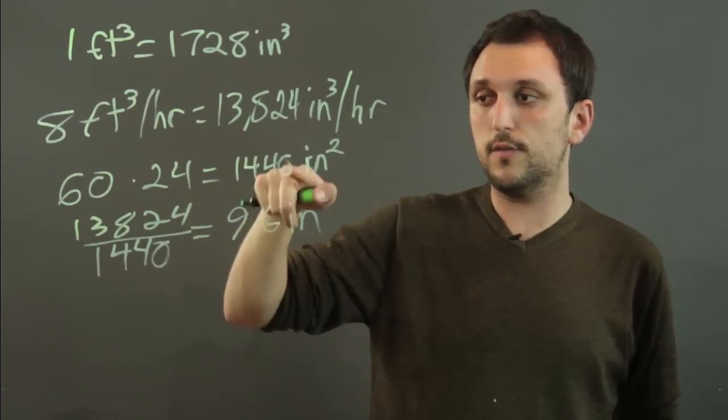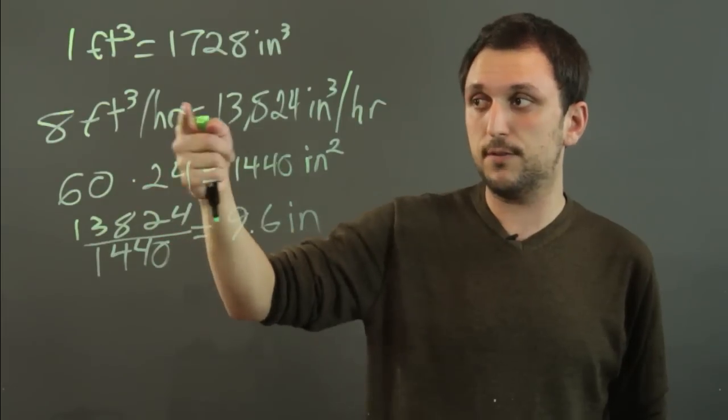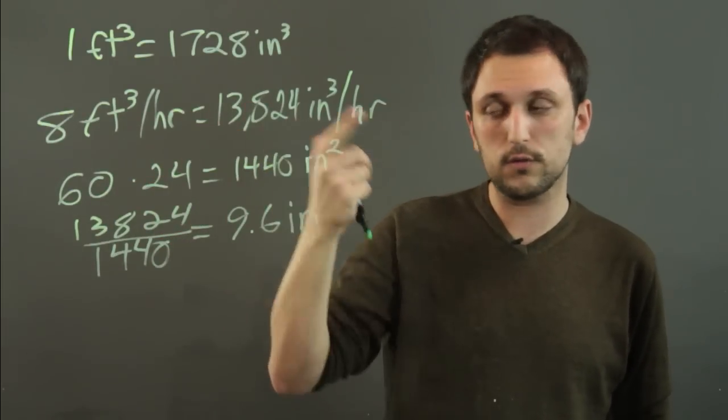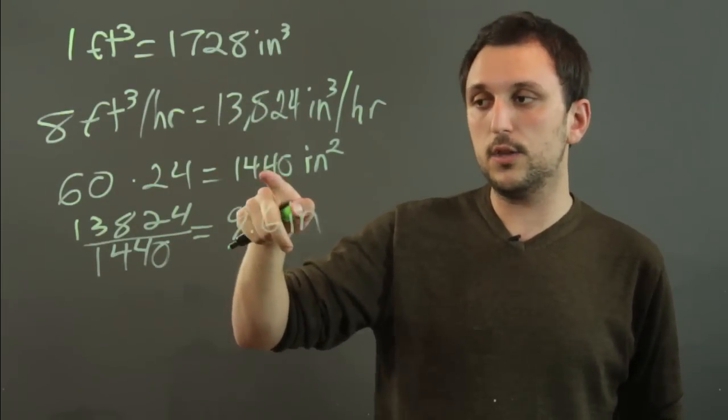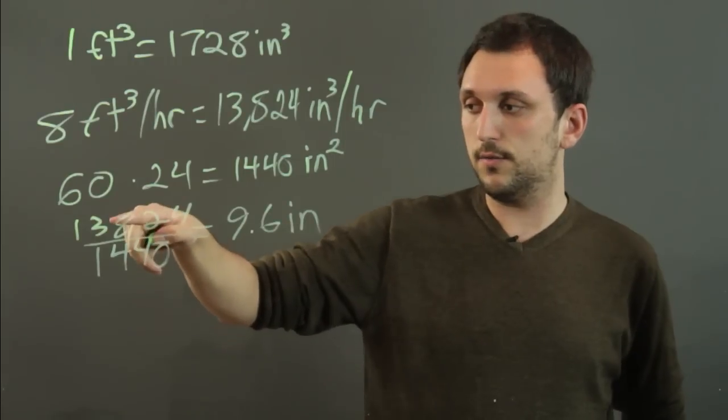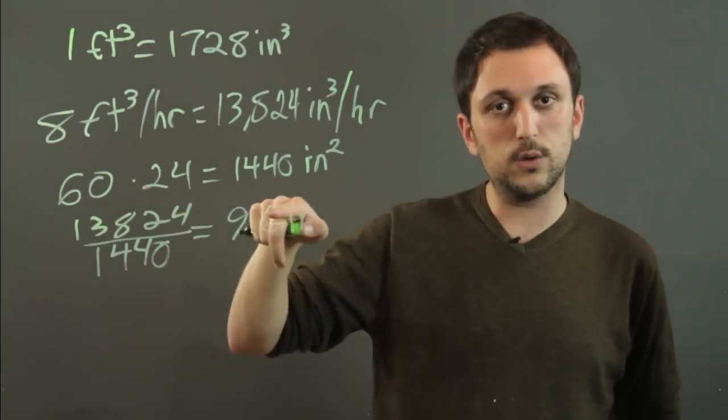Then you divide by the square base. If you had half of an hour, then you divide this by two first. If you had a quarter of an hour, you divide this by four. And then you take your square base, and you divide the cube by the square, and you get your depth.